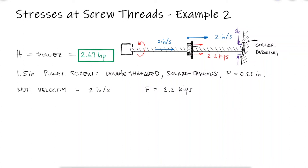From the motor, lead screw and nut setup from example 2 for the power screws topic, link below, we would like to identify the critical stresses at the threads and the equivalent von Mises stress.